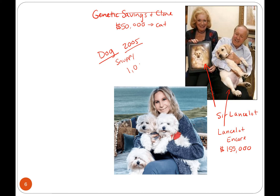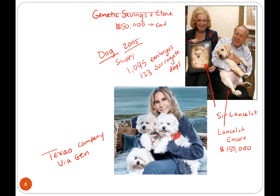It took 1,095 embryos and 123 surrogate dogs. But once they got the technology, they seem to just be able to do it much quicker. There's a Texas company called Viagen that will clone your dog for $50,000 — a bargain — and a cat for only $25,000, and for $1,600 they'll preserve your animal's genetic information until you need it.